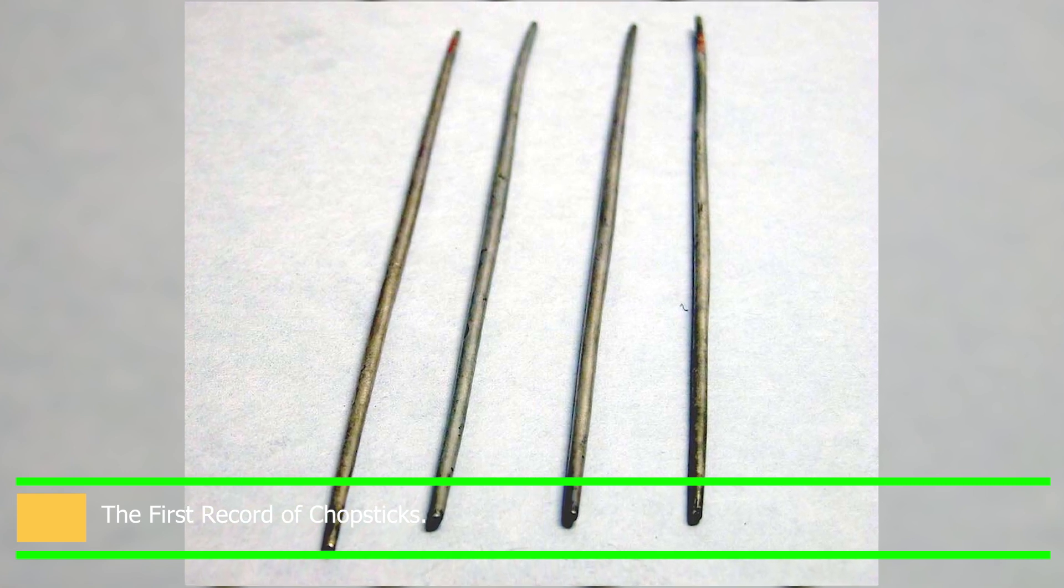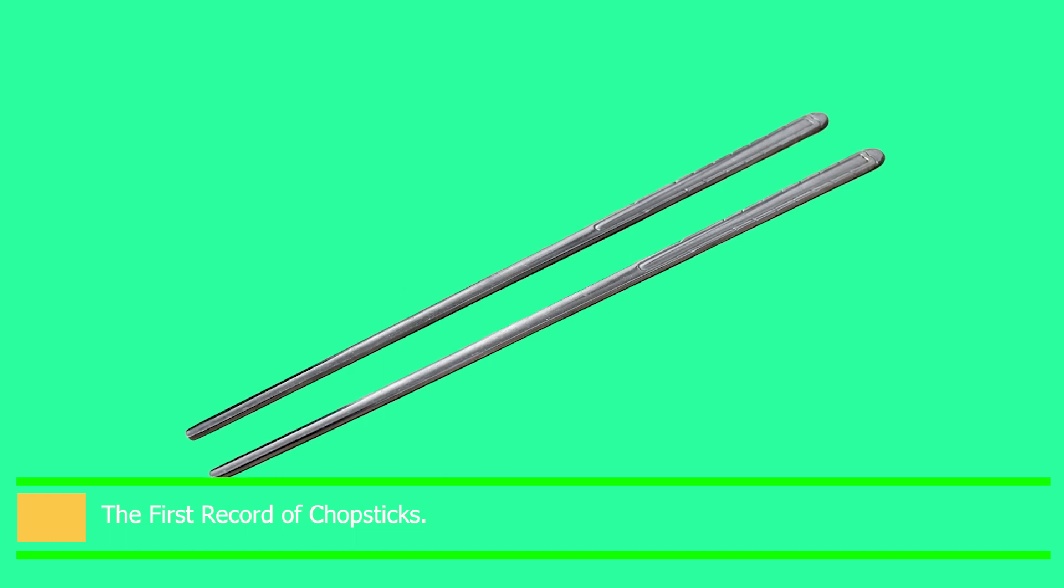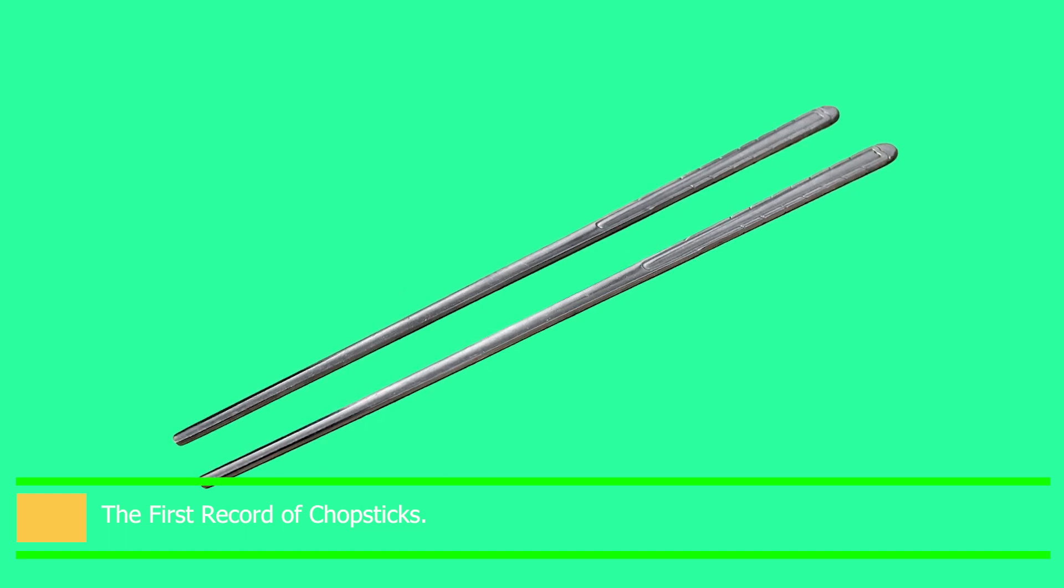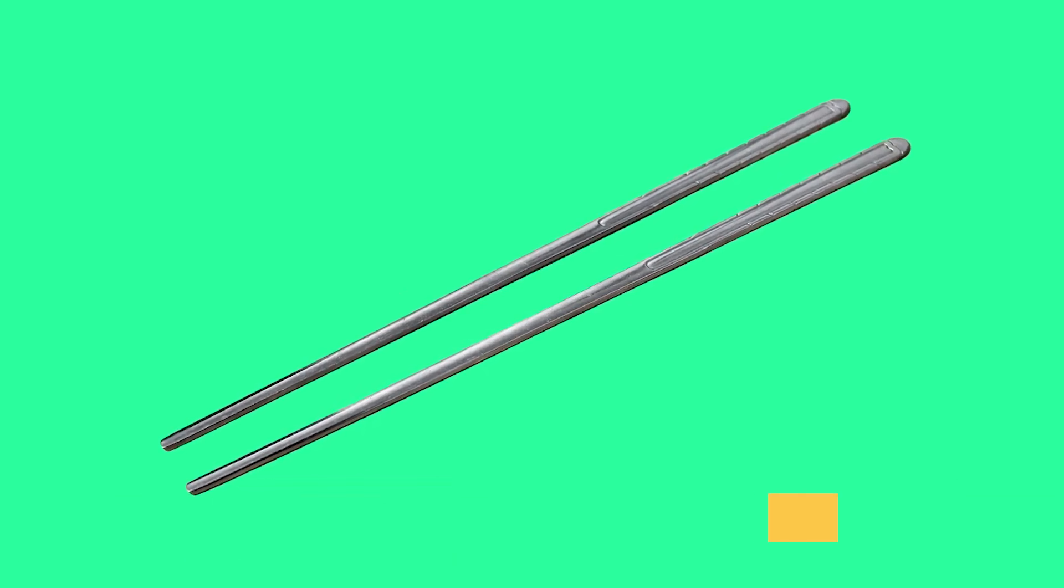Chopsticks made of bronze were discovered in tombs at the location. The capacity to reach deep into boiling pots of water and oil was a benefit of employing cast metal chopsticks.